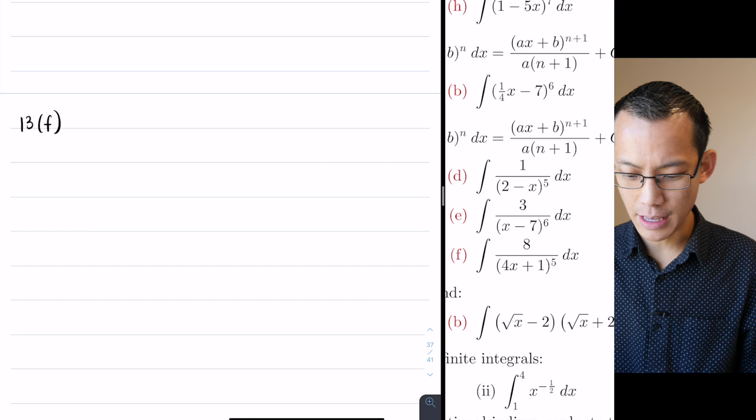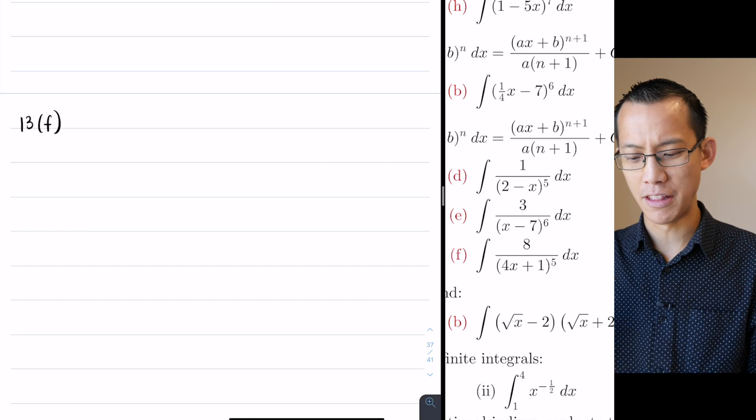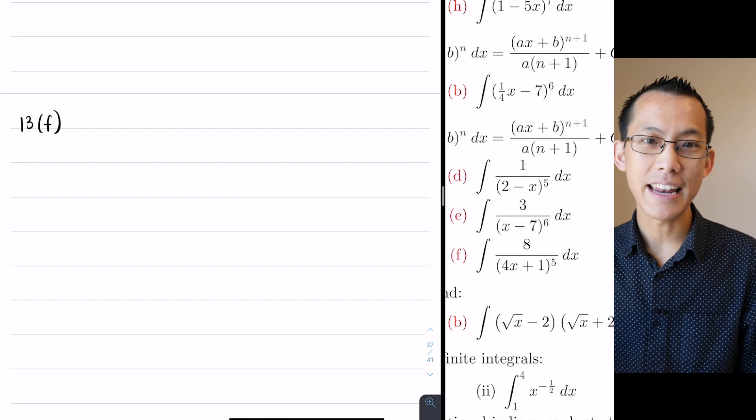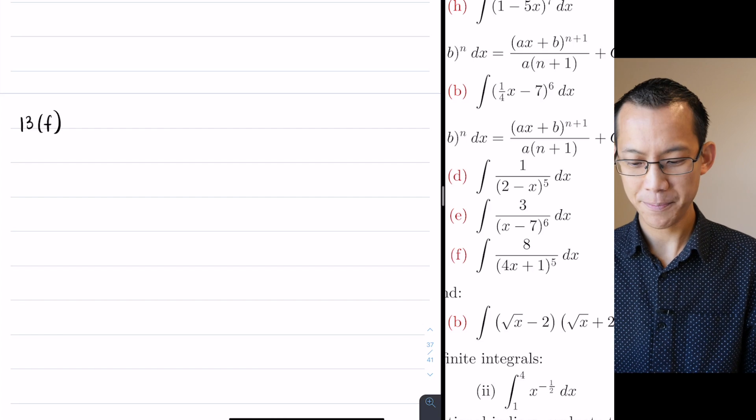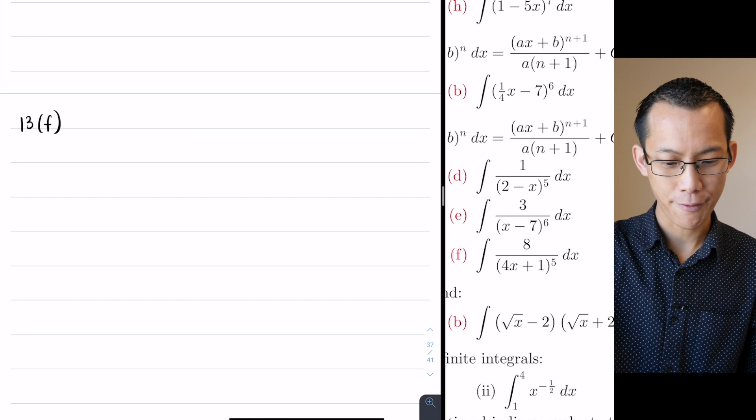And secondly, if you're memorizing a very prescriptive set of steps, then as soon as you have something which is adjusted to that, it becomes a question of when the formula applies and when it doesn't. I'd much prefer you to be understanding the way the chain rule works when you differentiate and then being able to say okay I can apply that in reverse. So let's have a go at 13f.